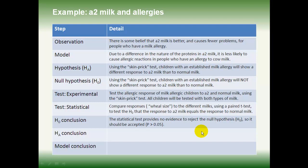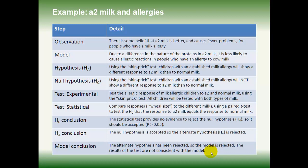Based on that, we have to reject the alternate hypothesis. Our original prediction turns out to be wrong — the researchers did not see a difference in response. This leads us to conclude that the alternate hypothesis has been rejected, so the model must also be rejected. The results of the test are not consistent with the idea that A2 Milk is going to cause a smaller allergic response in children who have milk allergies. In fact, if anything, the response to A2 Milk was a little bit larger than the response to normal milk, though either way the results were not consistent with the model.